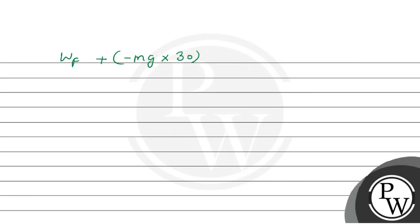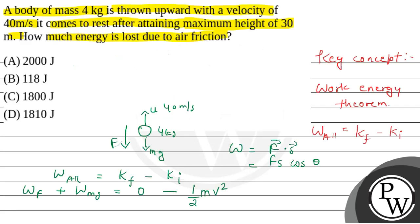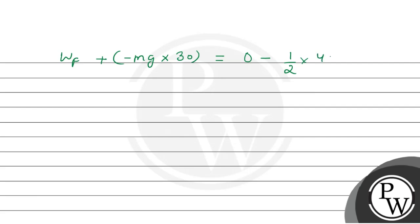Now that is equal to 0 minus half. Mass here we have given is 4 kg multiplied by V, which is 40 squared. Work done by friction plus minus m, which is 4 kg multiplied by g value 10, because g is the gravitational constant, multiplied by 30. Now that is equal to negative of half multiplied by 4 multiplied by 40 square.